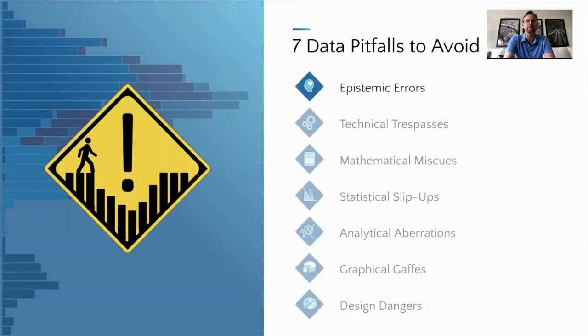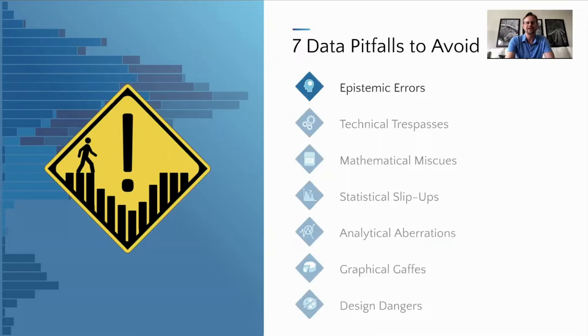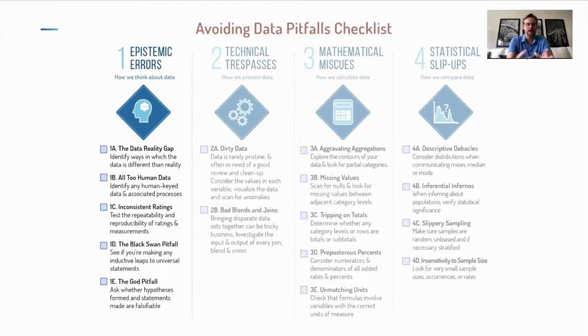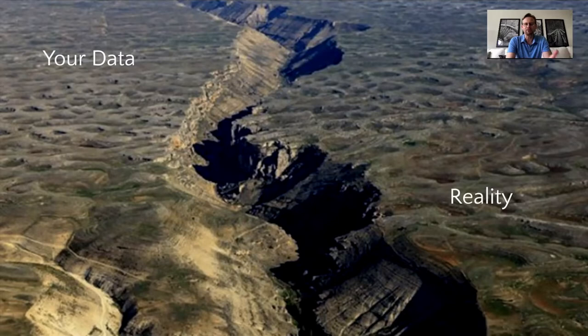The first kind of error is epistemic. Epistemology is the field of philosophy dealing with how we think, what we know, and what we believe. Pitfall 1A is called the data-reality gap. This is about the fact that when we work with cold, hard data — spreadsheets, databases, even simple lists — we often forget that there is a gap between that data and the reality it's trying to inform us about. Sometimes it's a narrow gap; sometimes it's a massive, Grand Canyon-level gulf.